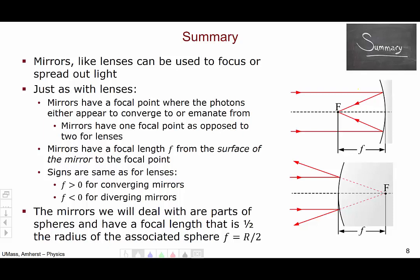Finally, the mirrors that we will deal with in this class are parts of spheres and will have a focal length that is one-half of the radius of the associated sphere, which we will write mathematically as f equals r over 2. This concludes this video. Thank you.